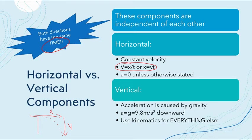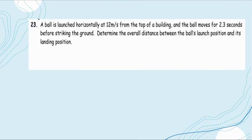In vertical motion, we have acceleration due to gravity working downward at 9.8 meters per second squared. If you want to set downward as negative, make sure you use negative 9.8 meters per second squared.